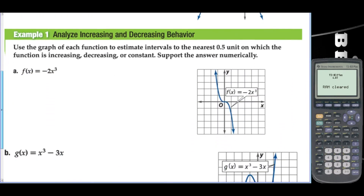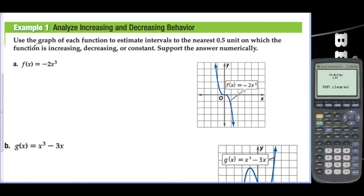Example 1: Analyze Increasing and Decreasing Behavior. Use the graph of each function to estimate intervals to the nearest 0.5 unit on which the function is increasing, decreasing, or constant. Support the answers numerically. This function is decreasing the entire time, so we'll say decreasing on negative infinity to infinity.